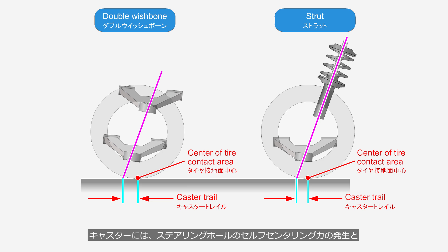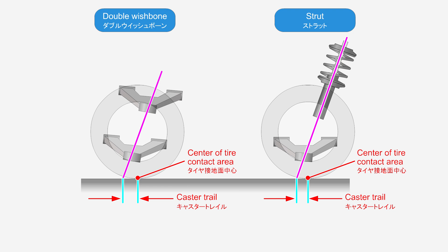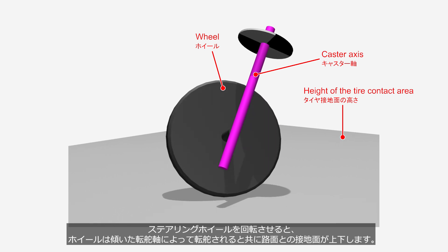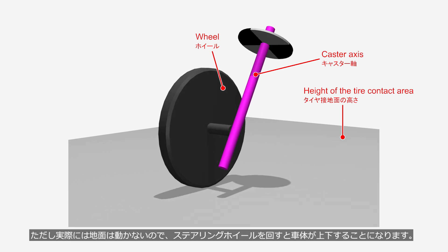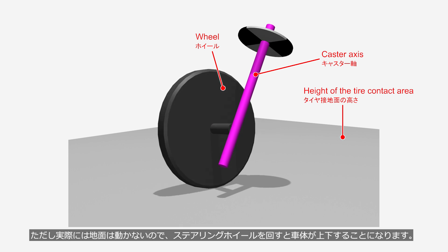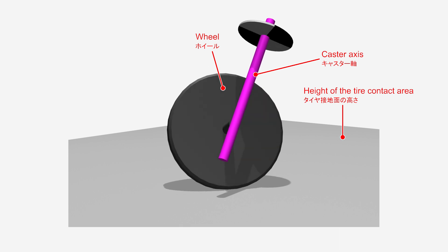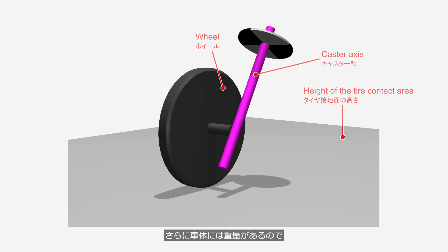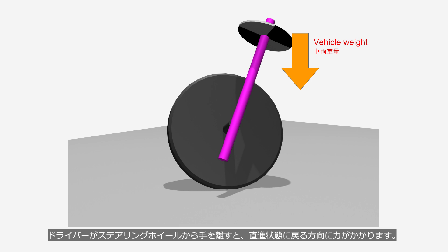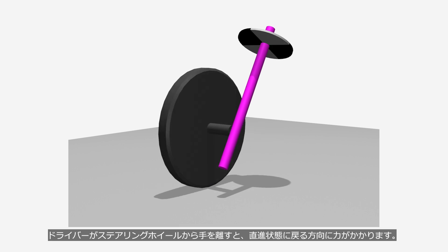Caster has two functions: generating the self-centering force in the steering wheel, and improving straight-line stability. When the steering wheel is turned, the wheels are steered by the tilted steering axis while the contact area with the road surface moves up and down. Since the ground does not move in reality, operating the steering results in the vehicle body moving up and down. Since the vehicle has weight, when the driver takes their hands off the steering wheel, a force acts on the wheels to return them to a straight-ahead position.